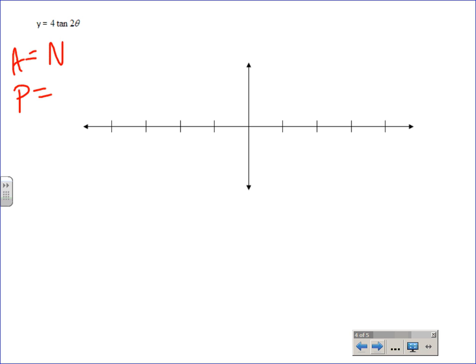Now, here's the tricky one, though. Now, for tangent, what is the normal period? 180. And you still divide by that number there, and so what is my new period? 90 degrees.